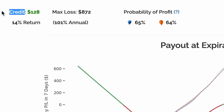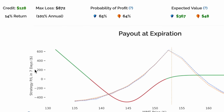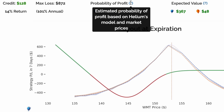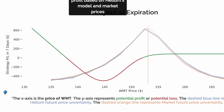Since this trade is net selling options, we are looking to collect a $128 credit from the market, with a maximum loss of $872 if we're filled at the mid-price. The options in this trade expire in 7 days and will give us a 14% return, or 101% annualized. The probability of profit is our best estimate of the likelihood of making money on this trade, represented by the green in the graph below.